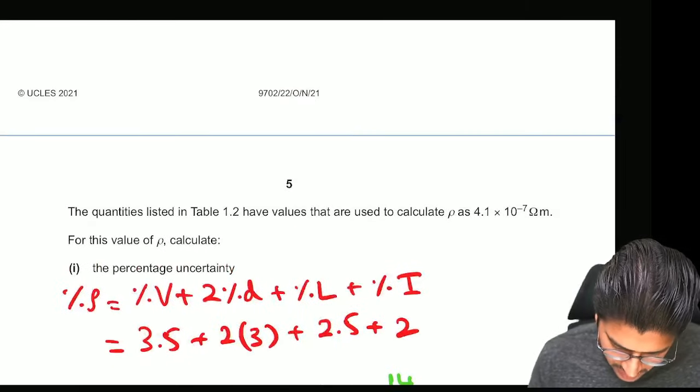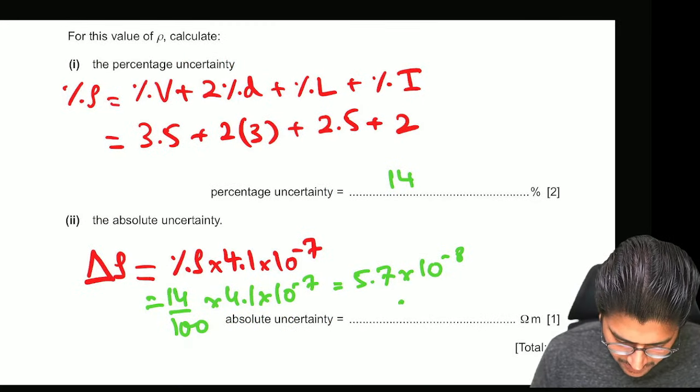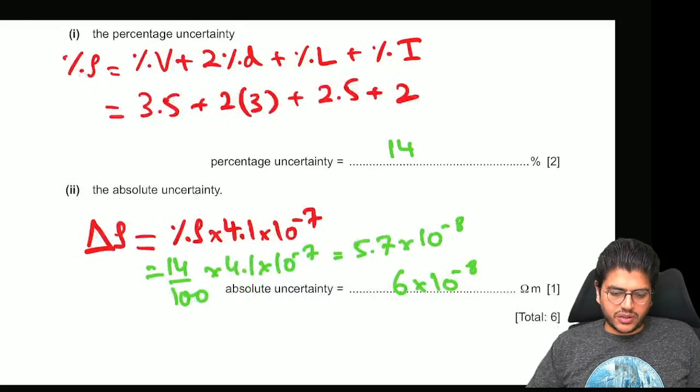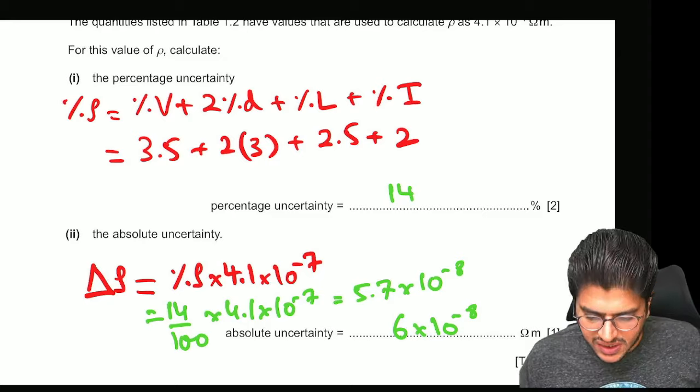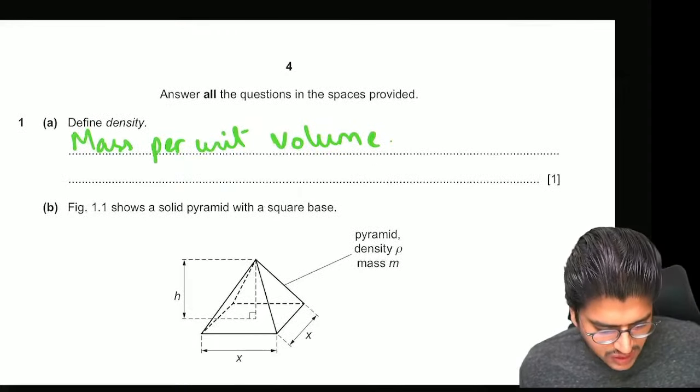Let me convert it to standard form. So you should get 5.7 into 10 to the power minus 8. Or if you want to convert it to one significant figure, you could write it as 6 into 10 to the power minus 8, because errors are usually written to one significant figure. Now moving on to the next question.